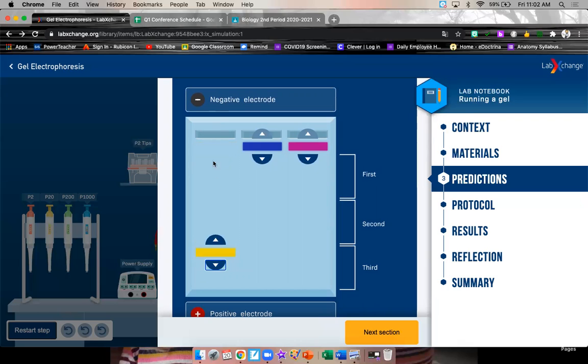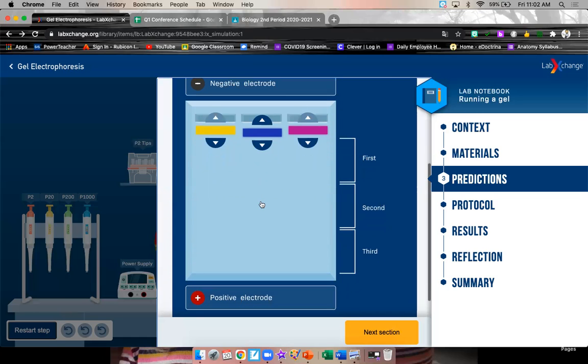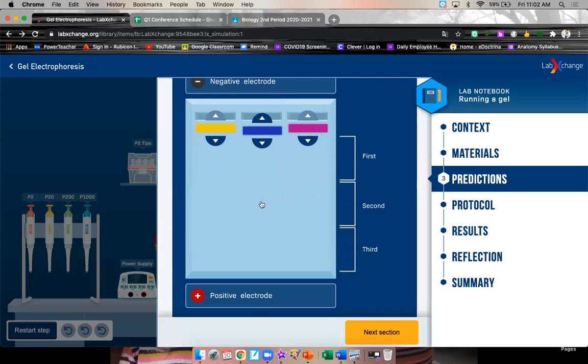So you're going to drag this to either, oops, that's not behaving for me. First, second, or third, wherever you think it's going to be. And this one, first, second, or third. And purple, first, second, or third. Don't be nervous about being wrong. This is a hypothesis. This is your prediction where you think it's going to be. This is smallest. This is medium. This is largest.